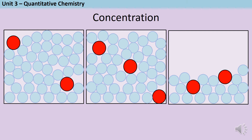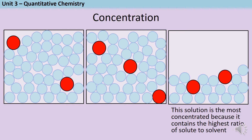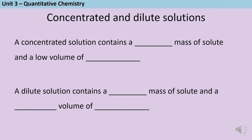What about these three solutions? Which one of these is the most concentrated and why? The solution on the right is the most concentrated. Even though the one in the middle has slightly more solute, it also has a lot more solvent, so the ratio between them is actually slightly less. A concentrated solution contains a high mass of solute and a low volume of solvent. A dilute solution contains a low mass of solute and a high volume of solvent.